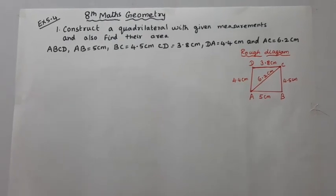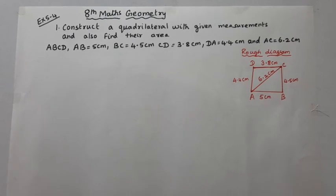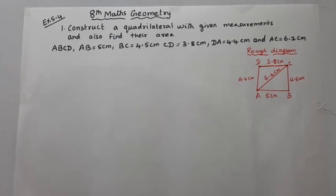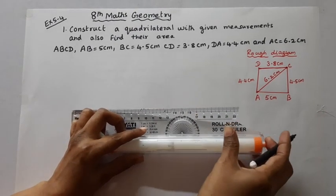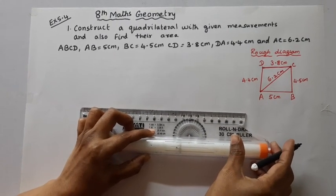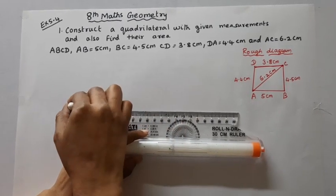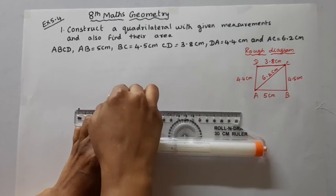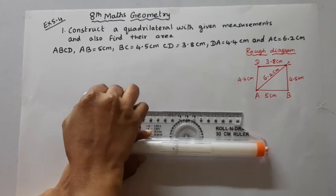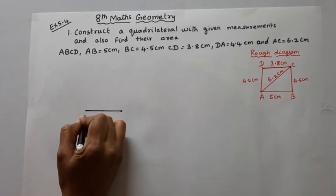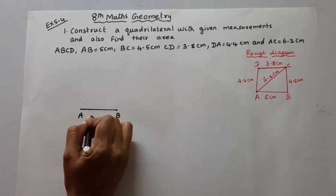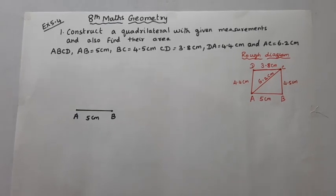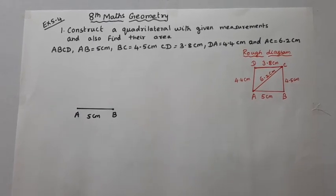First, how to draw AB = 5 cm. Draw a base line and mark point A, then mark point B at 5 cm. We need to make BC = 4.5 cm next.